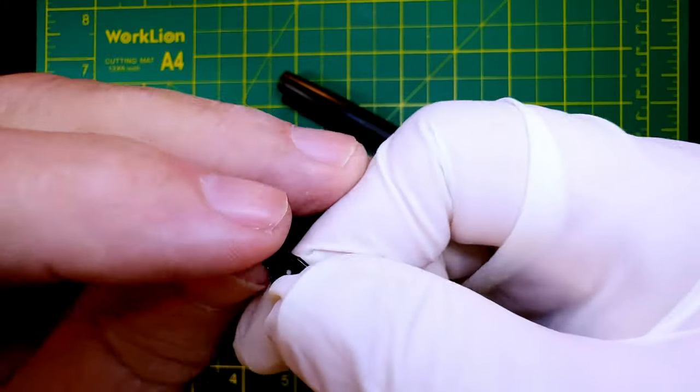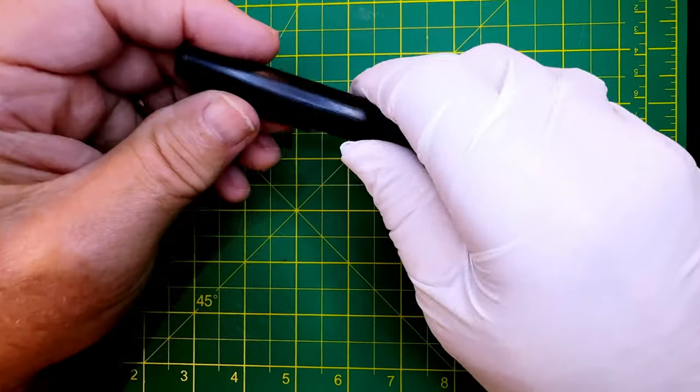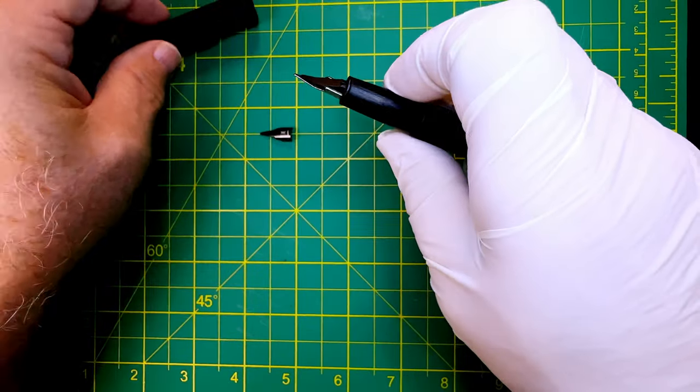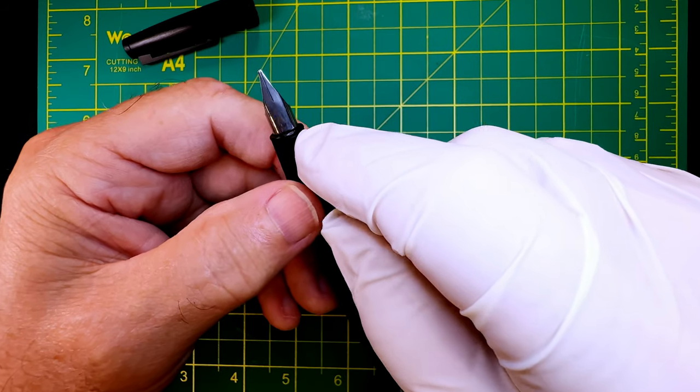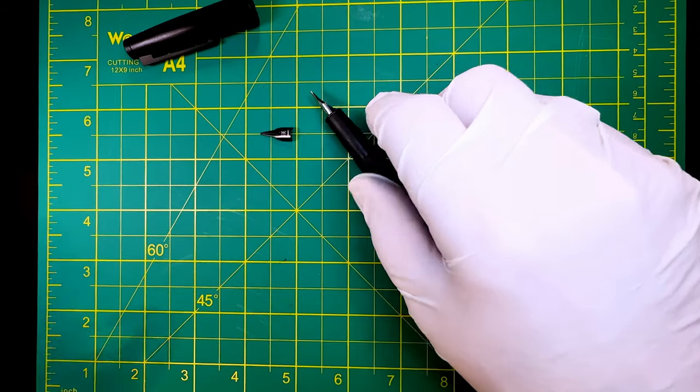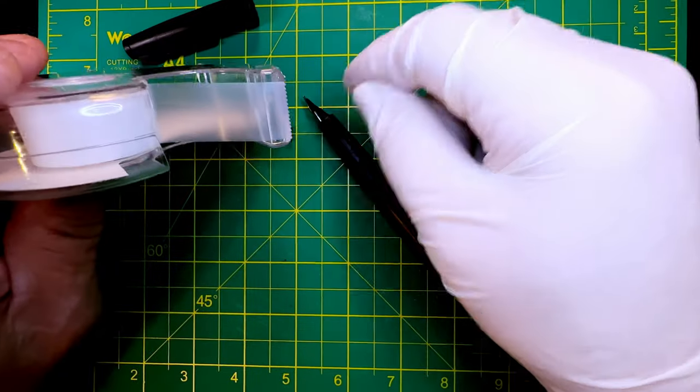Also, people said that they had difficulty getting the nib off of the Jinhao 80 to begin with. I showed a method for using a piece of tape and pulling it off.